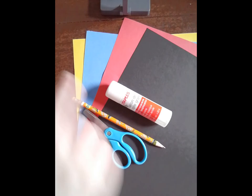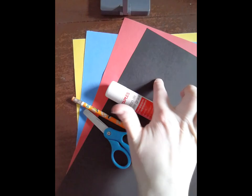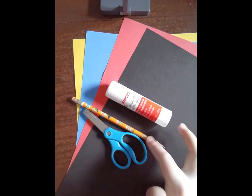I have colored construction paper - red, blue, and yellow. I have black paper, glue, pencil, and scissors.